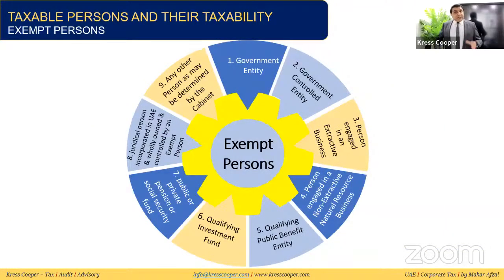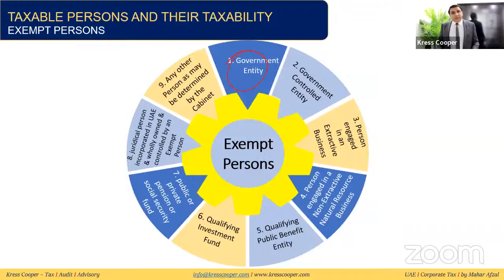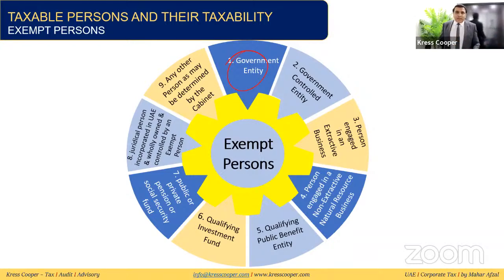Exempt persons include: government entities of the UAE — if not doing business they are fully exempt; if doing business, taxes and income must be apportioned. Government-controlled entities are also exempt, but any business activity they conduct is treated separately. Persons engaged in extraction of natural resources are exempt subject to conditions such as holding a license and being subject to tax at the Emirate level.